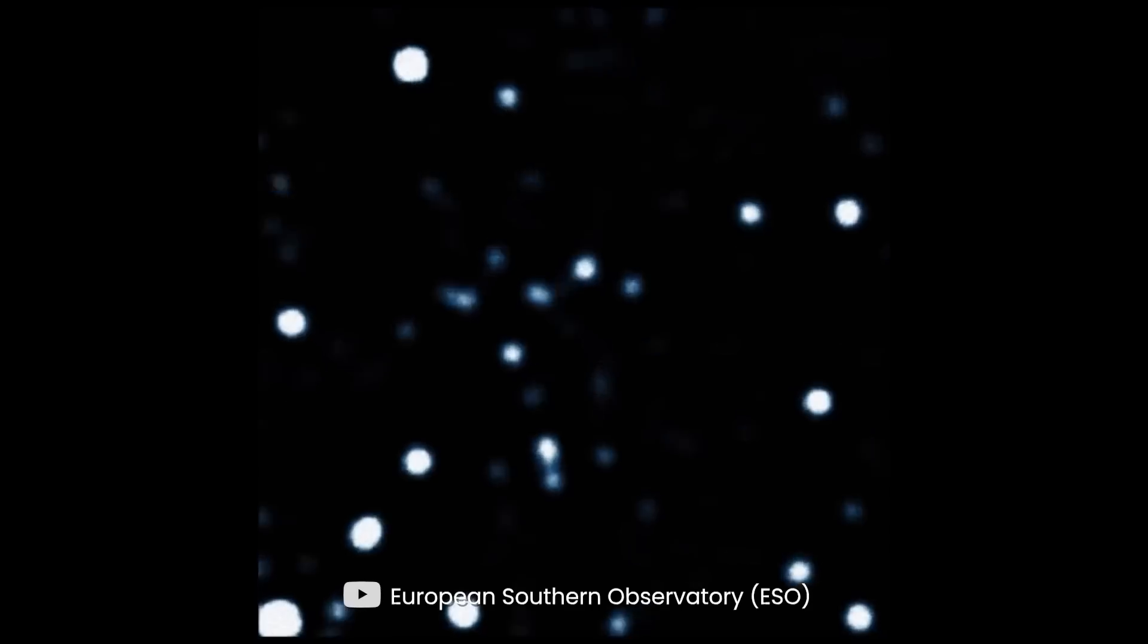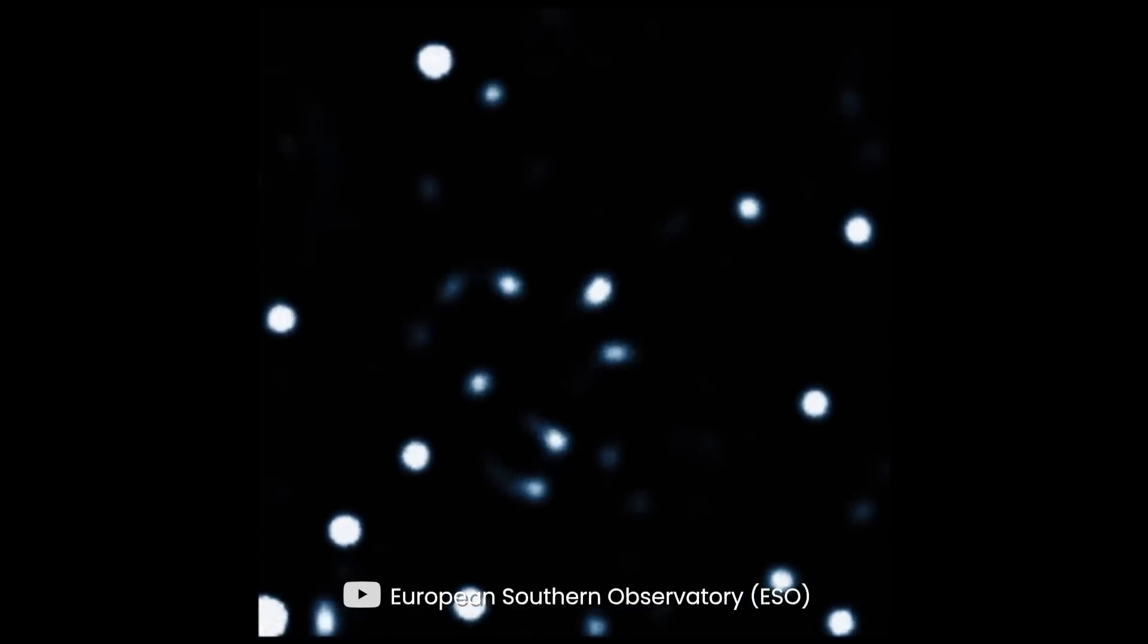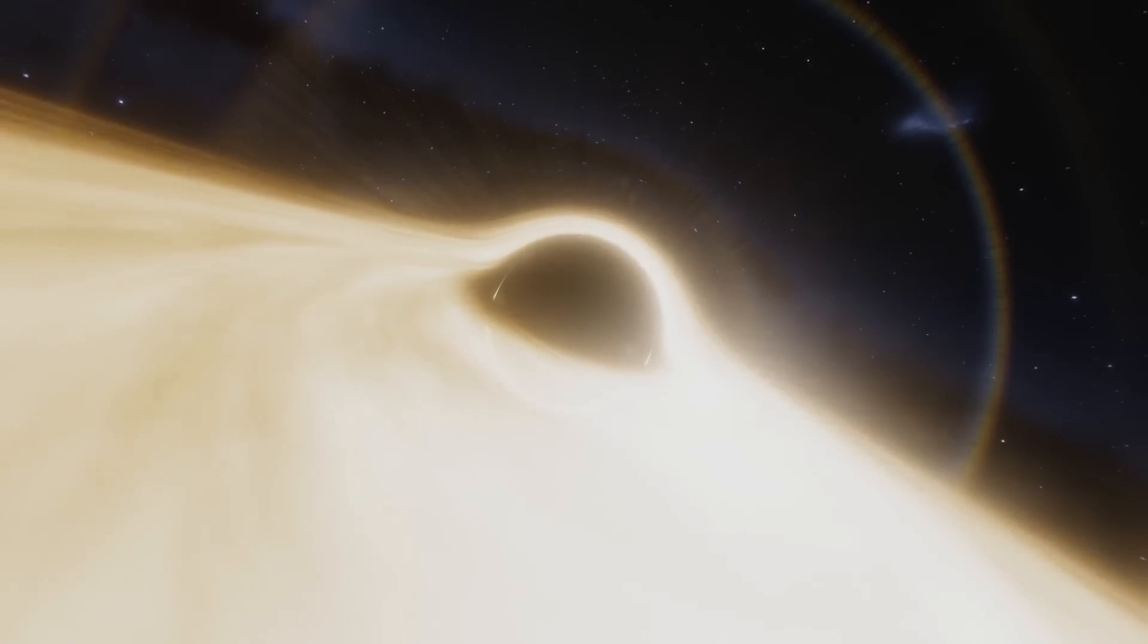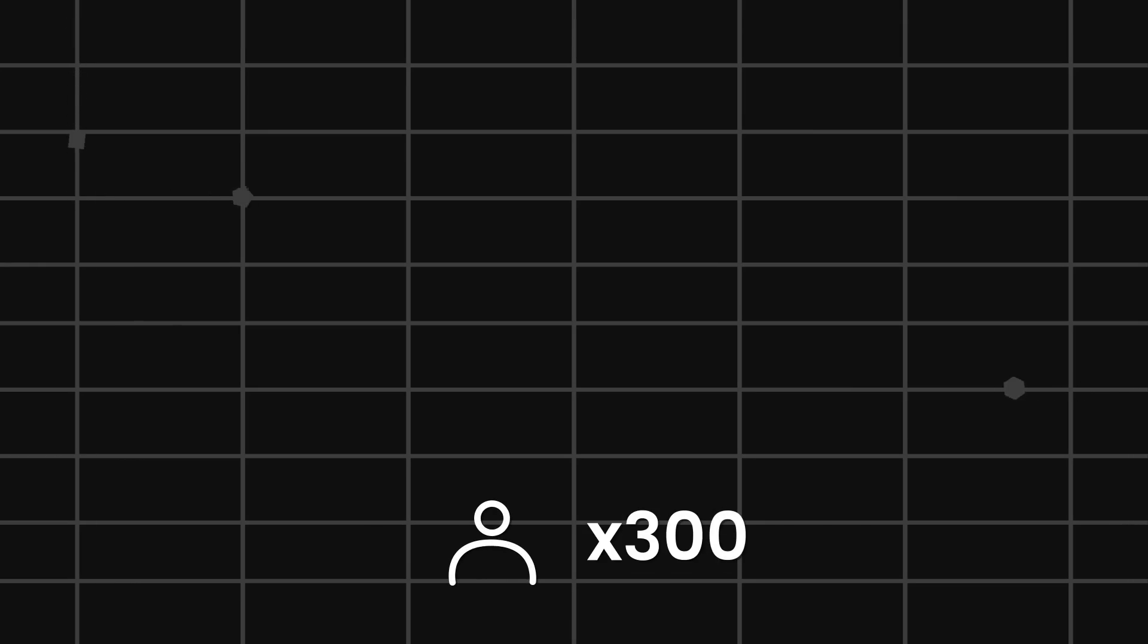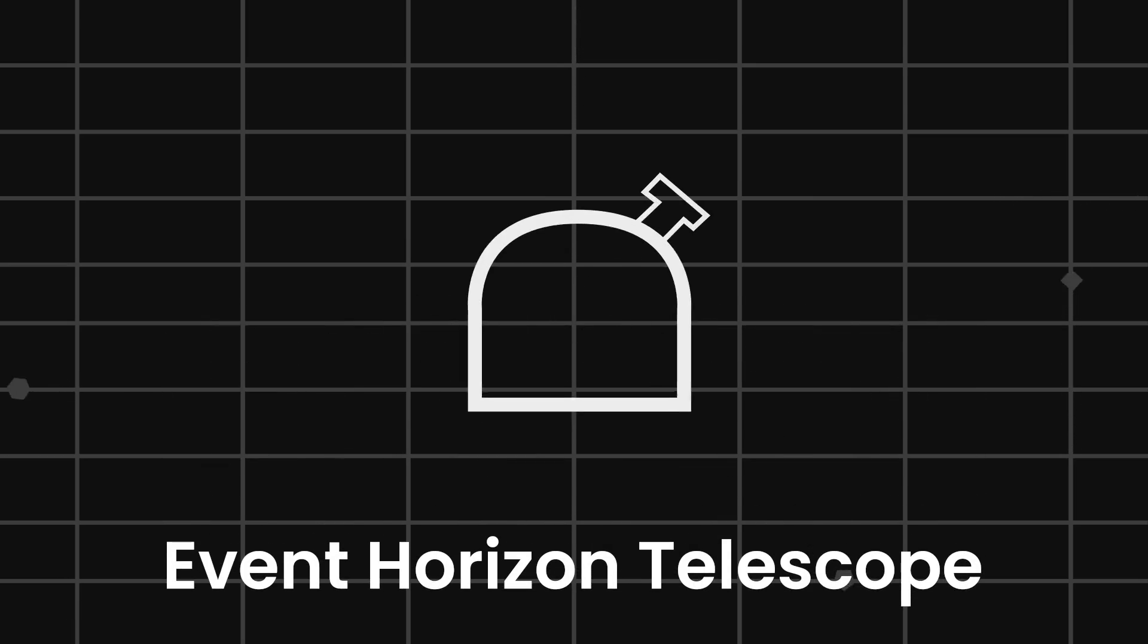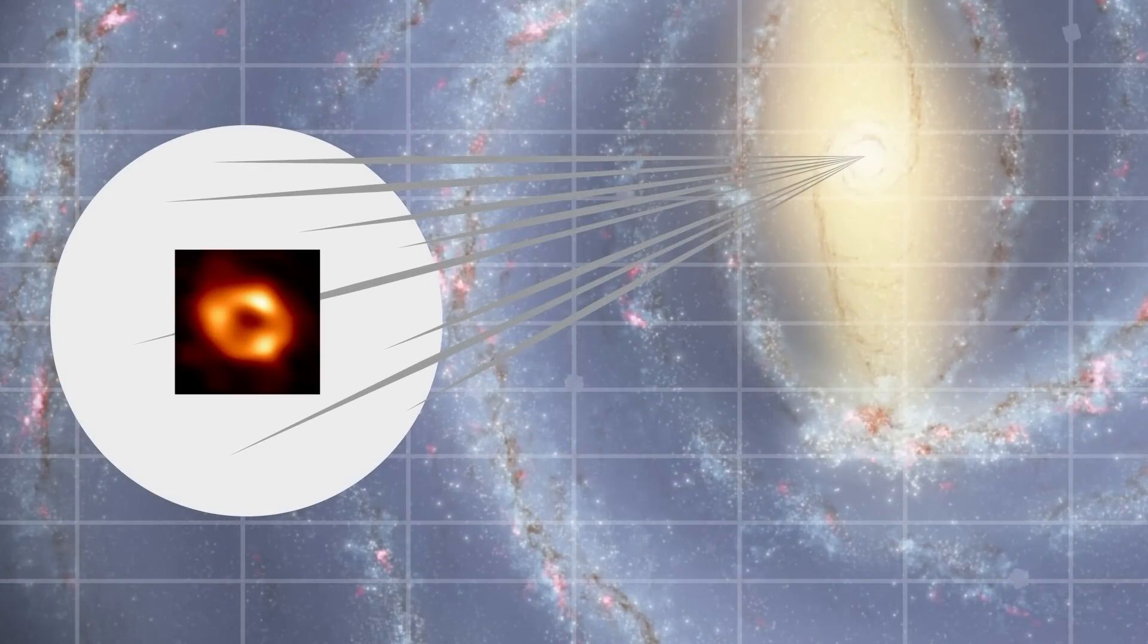Observations also showed that stars are attracted to the center of the galaxy by an incredibly massive object. However, any image of the black hole was just a computer simulation. To get a real image of it, 300 researchers from 80 scientific institutions around the world created a powerful Event Horizon Telescope. It connected eight radio observatories around the globe, forming a single visual telescope the size of the Earth.